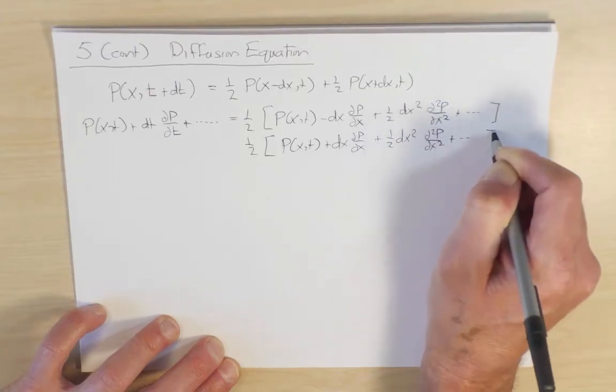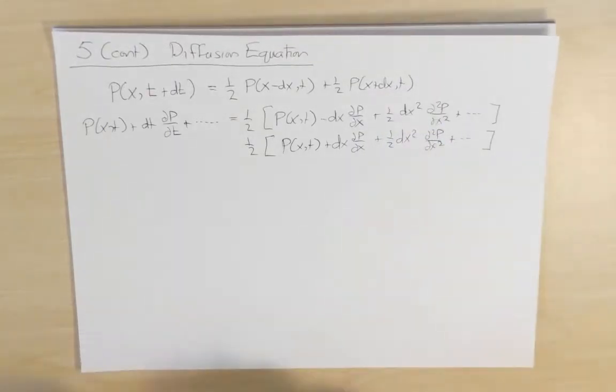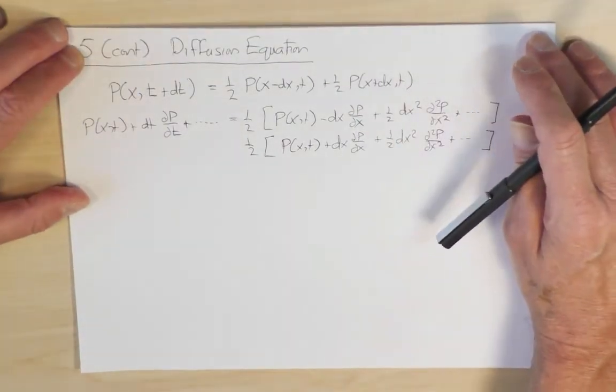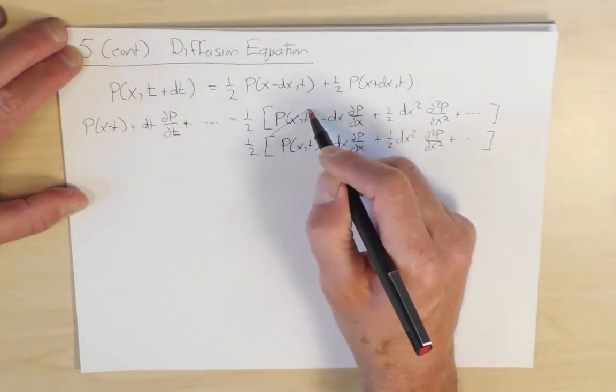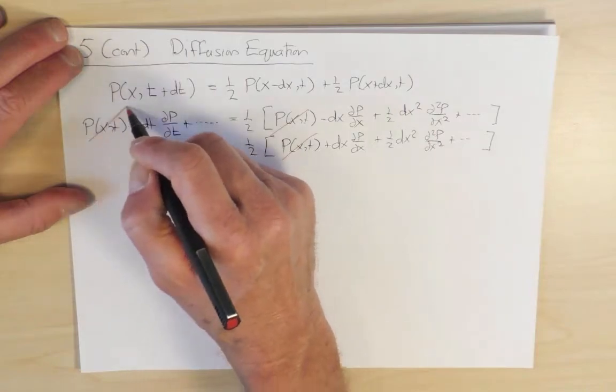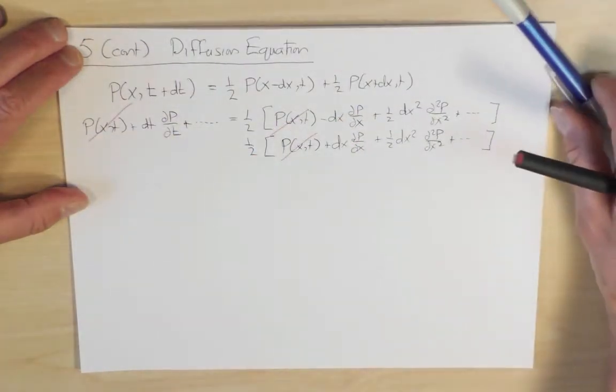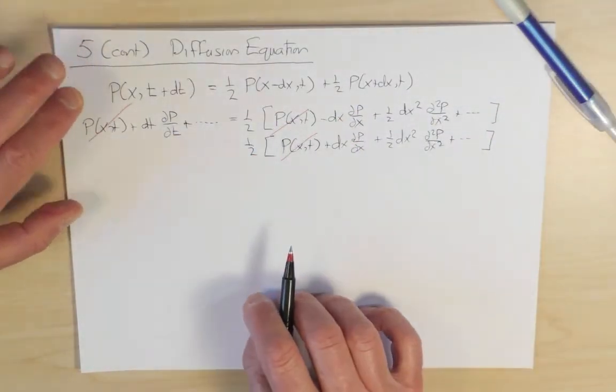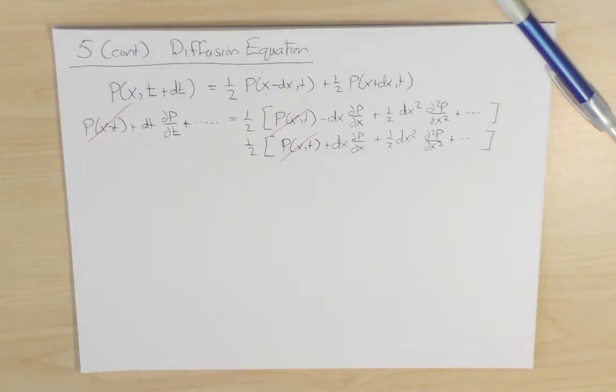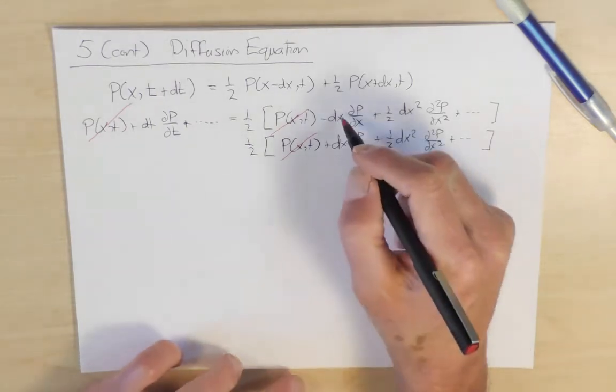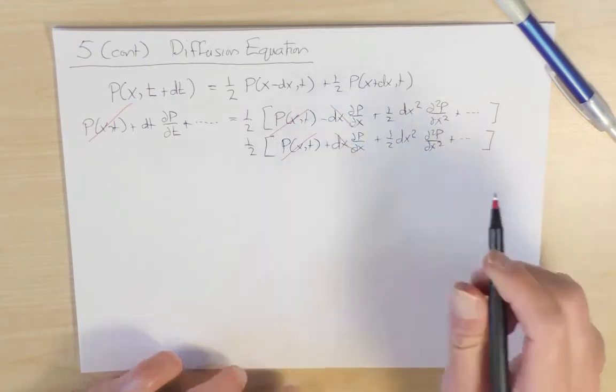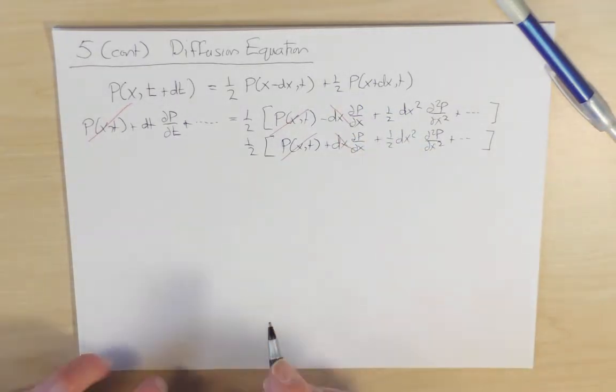Notice, first of all, that the zeroth order terms cancel. Similarly, for symmetric random walks, where the hopping probability to the right and to the left are equal, the first order terms cancel. And so what we're left with is a much simpler equation,